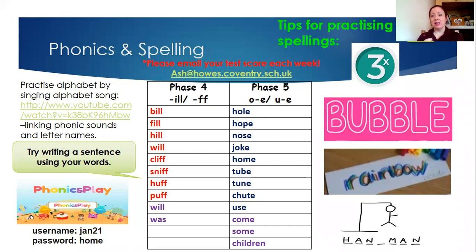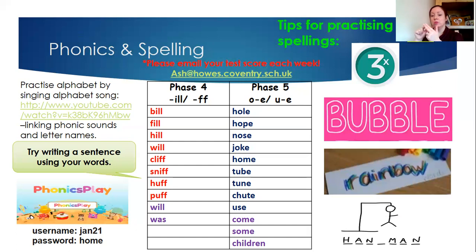For phase five, again we've got two sounds: the o split digraph — o something e — and the u split digraph — u something e. Your words are: h-o-l-e, hole; h-o-p-e, hope; n-o-s-e, nose; j-o-k-e, joke; h-o-m-e, home. You've also got: t-u-b-e, tube; t-u-n-e, tune; sh-u-t-e, shoot; u-s-e, use. And your tricky words are 'come', 'some', and 'children'.